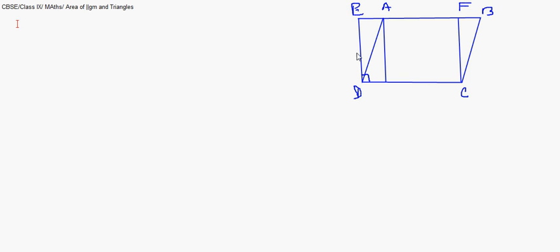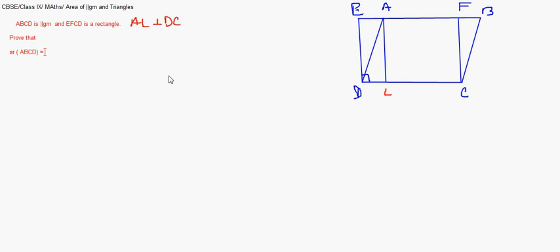The question says: ABCD is a parallelogram and EFCD is a rectangle. It also says AL is perpendicular to DC. Prove that area ABCD equals area EFCD. This will be simple — we can apply the previous theorem. Area of ABCD will also be equal to DL times AL. The first part is straightforward: a rectangle is also a parallelogram.